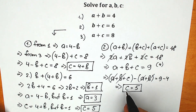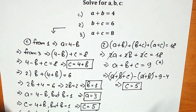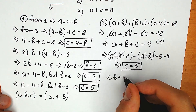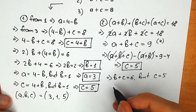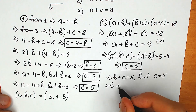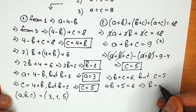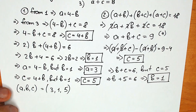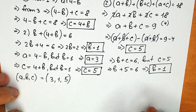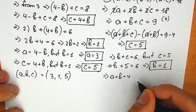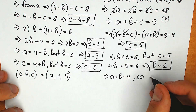Now substitute c equals 5 into the second equation: b plus c equals 6, so b plus 5 equals 6, giving b equals 1. For the final step, from the first equation a plus b equals 4, and since b equals 1, our a equals 3.